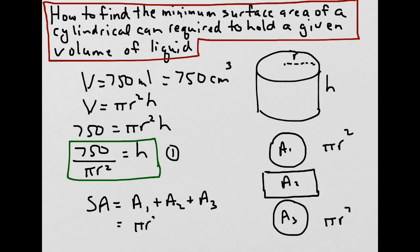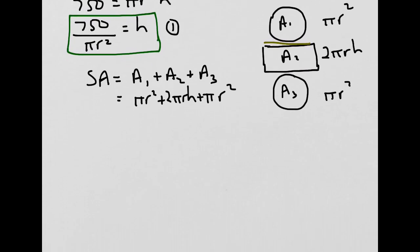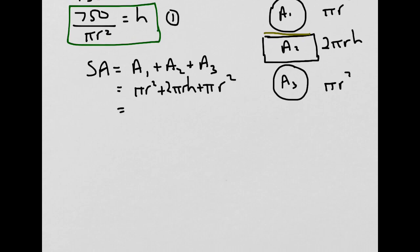So we have pi r squared for the top and pi r squared for the bottom. The area of the rectangular part would be length times width, where the length is the circumference of the circle. So the area would be 2 pi r times the height h. Adding these together gives us the equation for the surface area of the cylinder. Simplifying: 2 pi r squared plus 2 pi r h. We'll leave it like that for now.